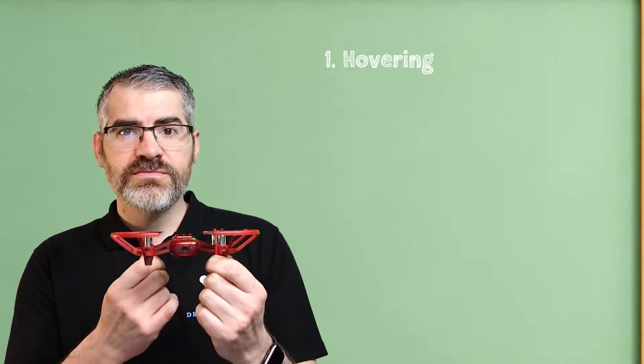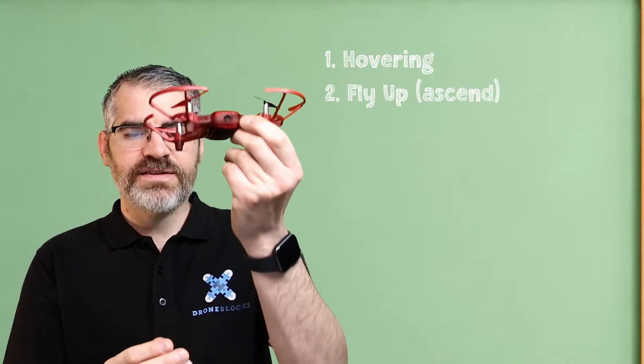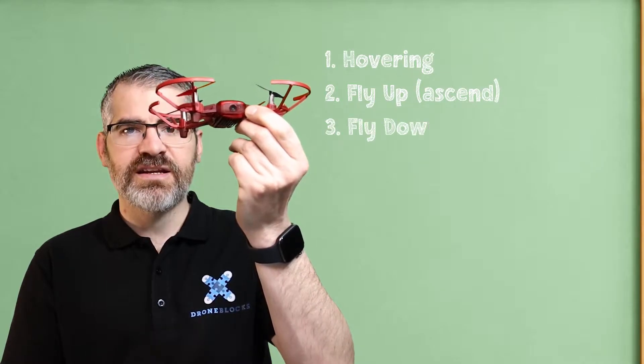There's hovering, that's when the drone hovers in midair. There's flying up or ascending when the drone flies up, and then there's descending or flying down.